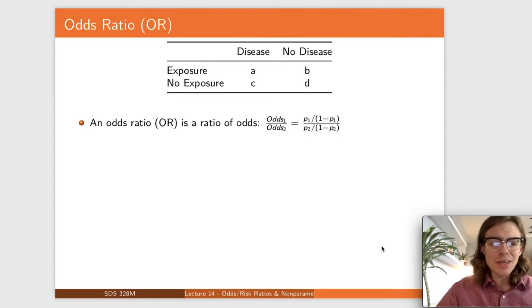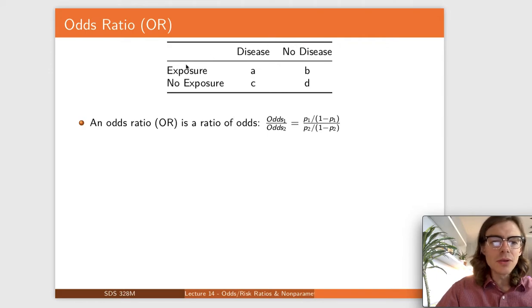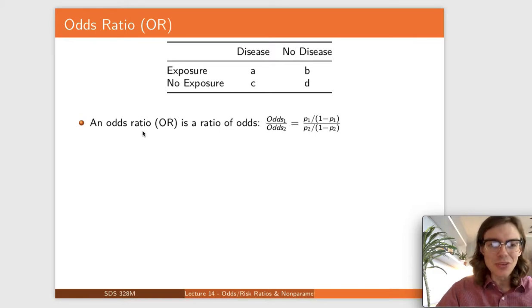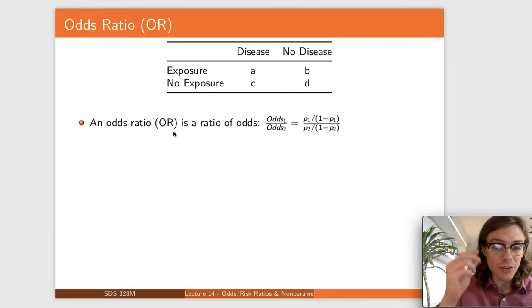So typically it's nice to think about odds ratios in a setting like this where you have two categorical variables. Maybe you're looking at the probability of getting a disease given that someone was exposed or not exposed to something. I guess this is an example I always use — it's very vague, but current events have a way of mapping themselves onto things. Anyway, an odds ratio is just what it sounds like: it's a ratio of odds, as we talked about previously.